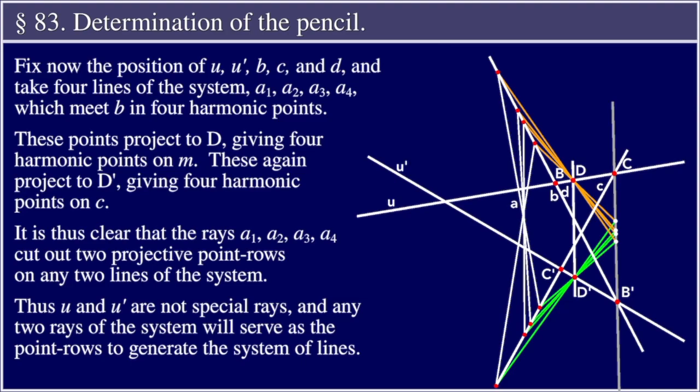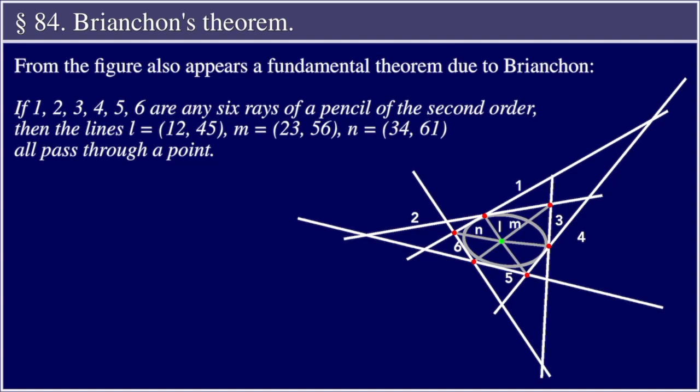It is thus clear that the rays A1, A2, A3, A4 cut out two projective point rows on any two lines of the system. Thus u and u' are not special rays, and any two rays of the system will serve as the point rows to generate the system of lines.